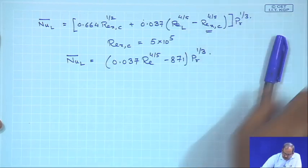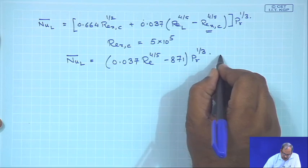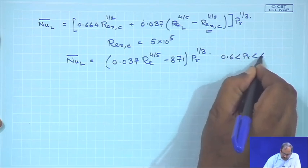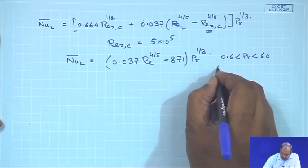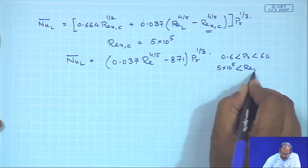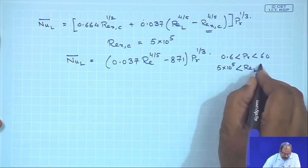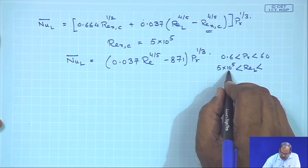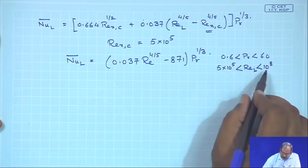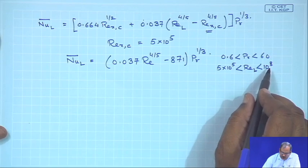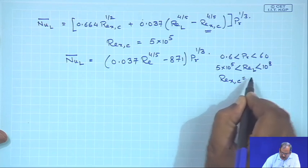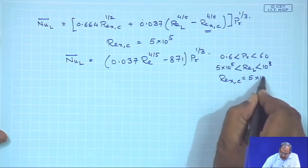This expression is valid for Prandtl number between 0.6 and 60, and the Reynolds number at the end of the plate Re_L must be greater than 5×10⁵ but within 10⁸ — the upper limit of the correlation — with the transition Reynolds number taken as 5×10⁵.